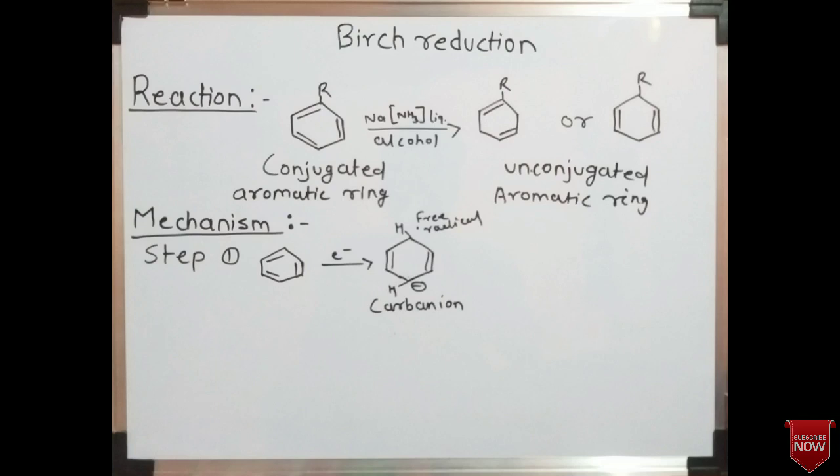Now let's see the mechanism of the Birch reduction reaction. The mechanism involves four steps. In the first step, the alkali metal donates one electron to the aromatic ring. The benzene ring itself is an electron-rich species, and addition of one electron to the ring leads to the formation of a free radical on one of the carbon atoms of the ring.